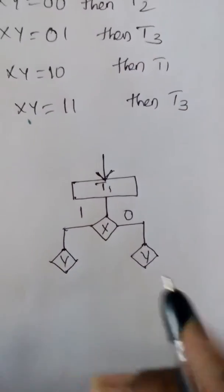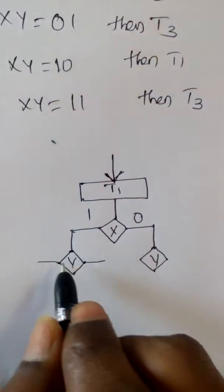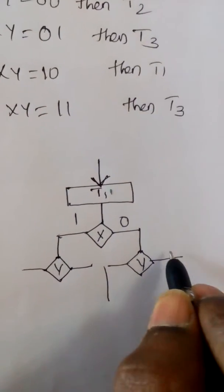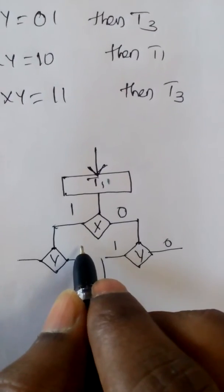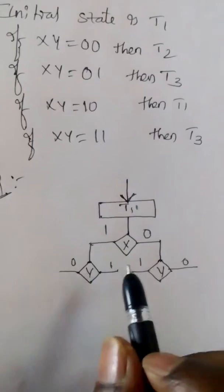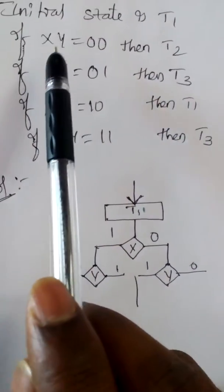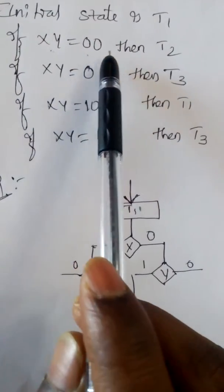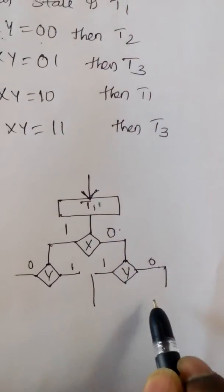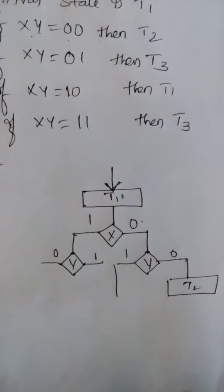Y has to take some decisions: 0 or 1. Now, if xy is 00, that is x equals 0 and y equals 0, then we go to T2.